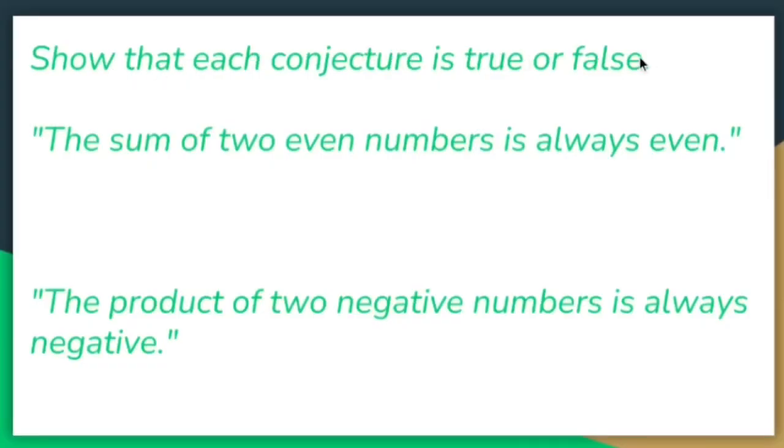Show that each conjecture is either true or false. So alright, I've got two statements here and I need to show if the statement is a correct statement or not a correct statement.